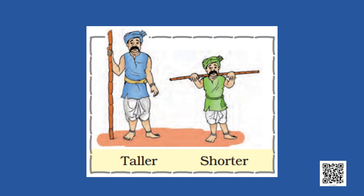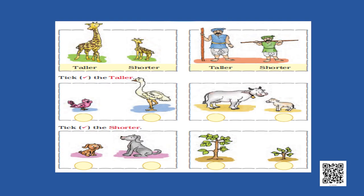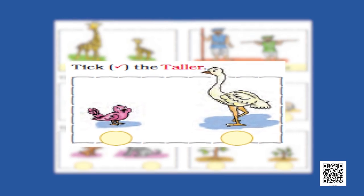Let us see some more objects. There are these two men — one is taller, another is shorter. It is written there. Can you tell me: the stick which is in the taller person's hand, is it taller than the man, shorter, or are both the same? Both are equal. Try to find which one is taller and which one is shorter.